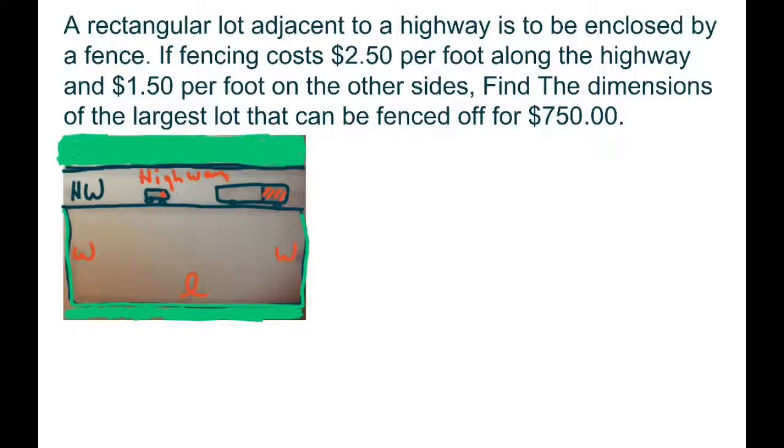If the fencing costs $2.50 along the highway, so basically we have this is length and it equals $2.50 and $1.50 per foot on the other sides, find the dimensions of the largest lot that can be fenced off for $7.50.